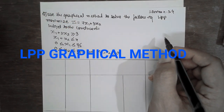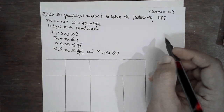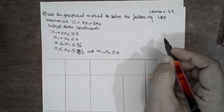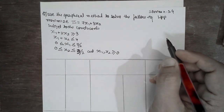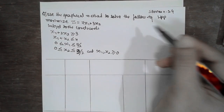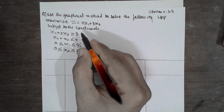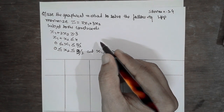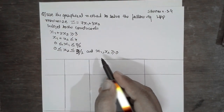I am teaching you Operation Research — specifically the LPP, linear programming problem, graphical method. In this problem, a maximum condition has been given along with the subjective constraints. These are the data they have given.